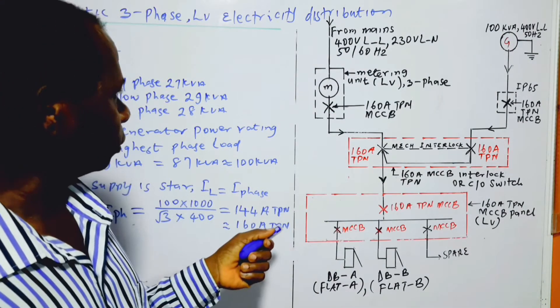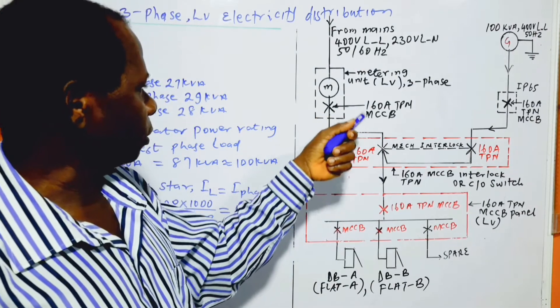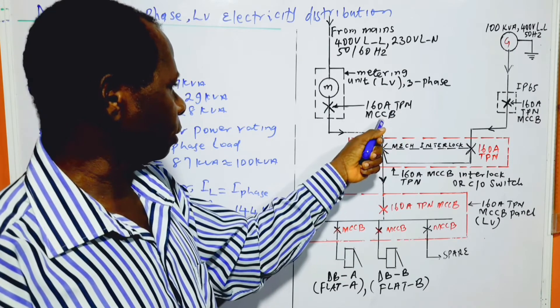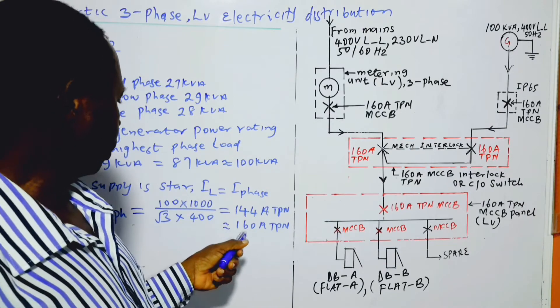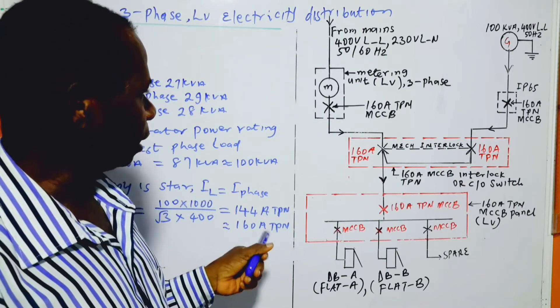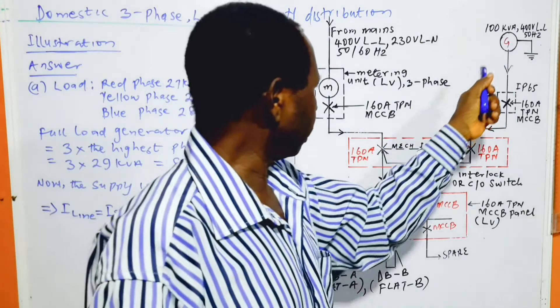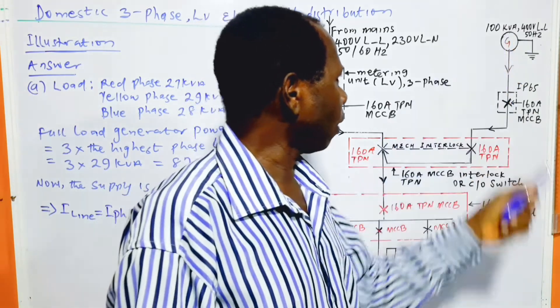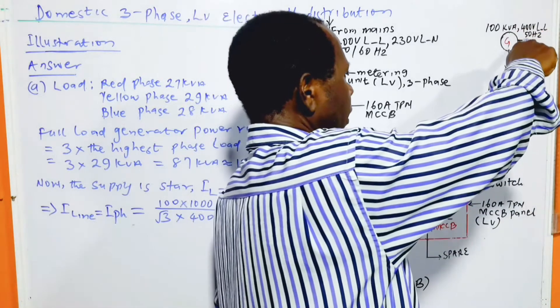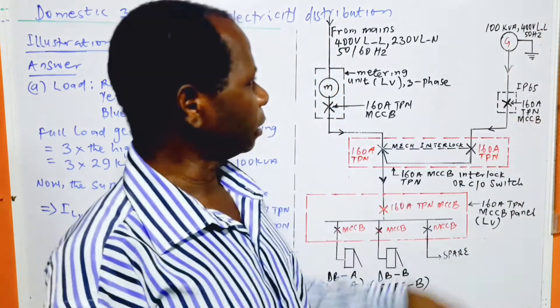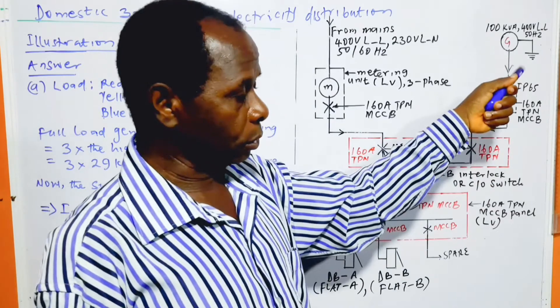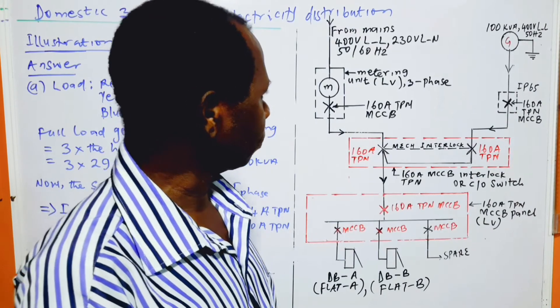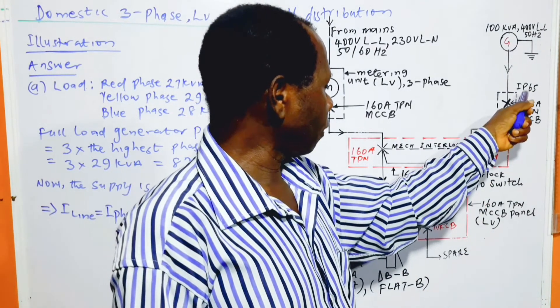We have the 160 ampere triple phase with neutral MCCB, the value of which is calculated here. We have the generator size, or the rating, which is 100 kVA, 400 volt line to line, 230 volt line to neutral, and at 50Hz or 60Hz as the situation will be.